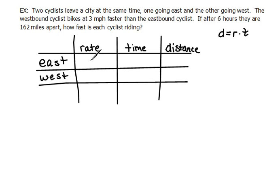I have created a table with rate, time, and distance because rate times time is distance. I also wrote as my row headings east and west because we have one cyclist going east and the other going west. Now let's fill in this table with the information given in the problem.